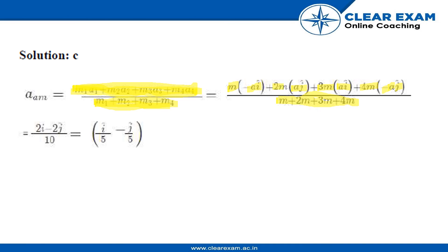So this will total up to 4 plus 3 is 7, plus 2 is 9, plus 1 is 10m. And in the numerator we are getting 2i minus 2j cap. So on further simplifying we are getting i cap upon 5 minus j cap upon 5. So this is our answer.